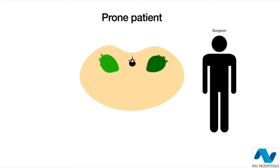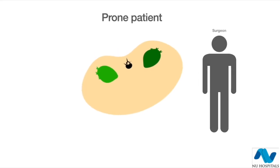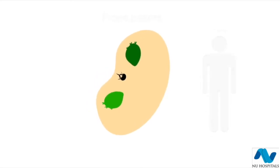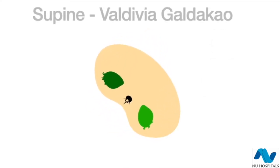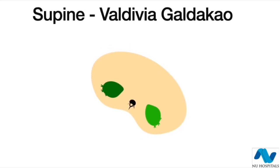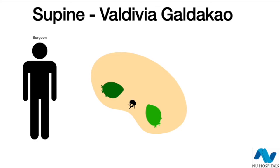Now this is a typical prone patient with the surgeon standing on one side. Let us see what happens when we turn the patient supine. The patient has been turned supine and this is a modified Valdivia-Galdakao position with the patient at 30 degrees to the horizontal.